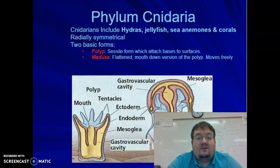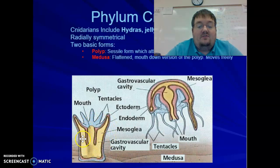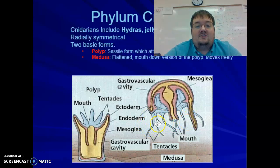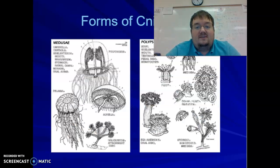The two basic body forms we see in cnidaria are polyps, which is the sessile form — sessile means they attach to a surface and don't move. That's the more common form. Then there's the medusa form, which you can think of as the snake-lady with snakes in her hair. You can see the tentacles coming down — it's basically a mouth-down version of the polyp. If you compare the two forms, they're actually quite similar; imagine flipping the polyp form upside down and you have the free-moving, motile medusa form.